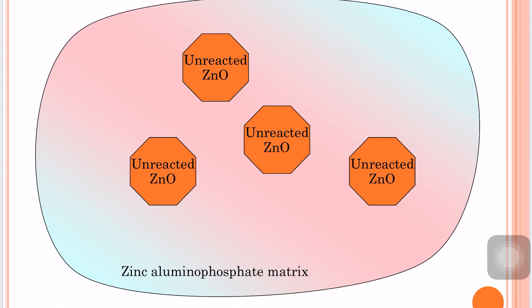This schematic diagram represents the structure of the set cement. The set cement consists of unreacted zinc oxide particles in the center, surrounded by a zinc aluminium phosphate matrix.